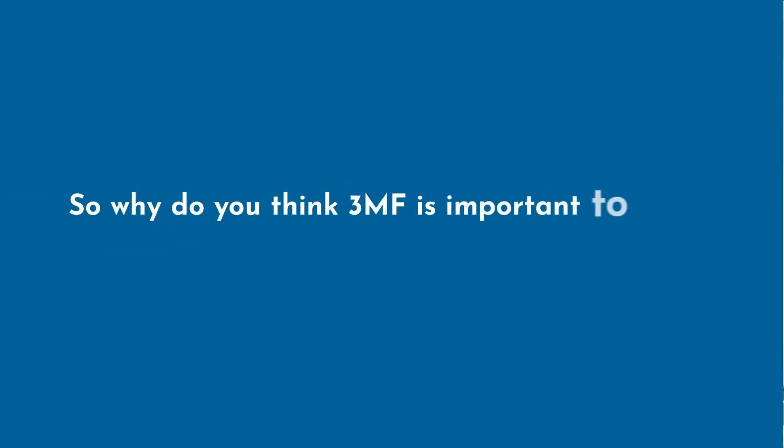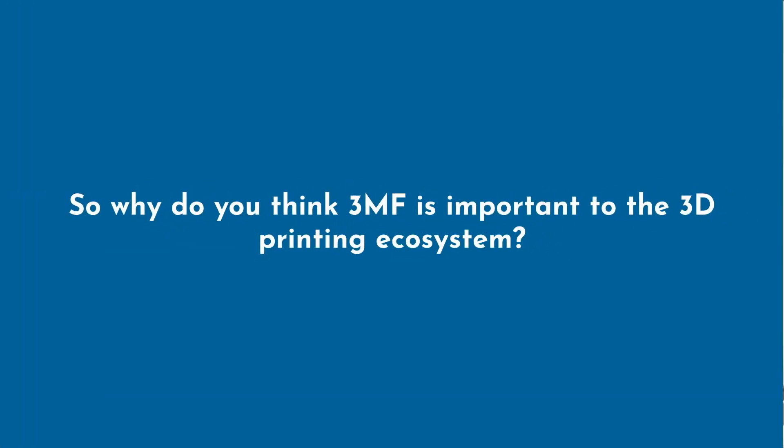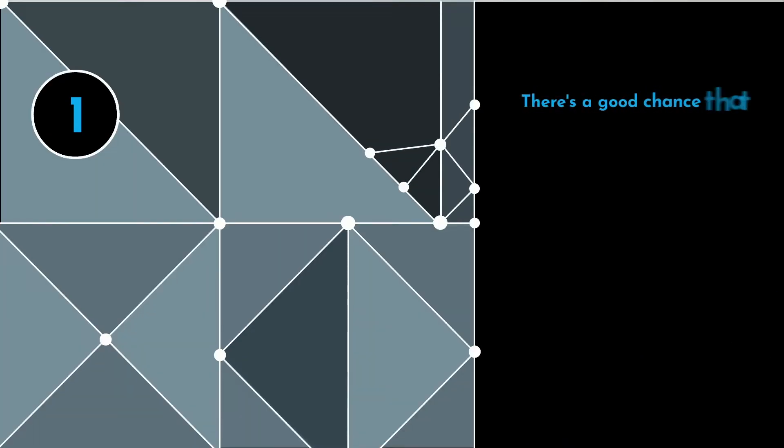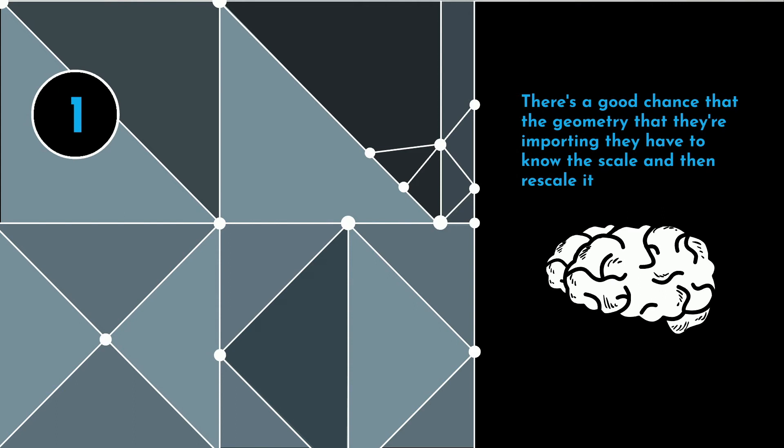Why is 3MF important to the 3D printing ecosystem? Today we see three key things. First, when folks import mesh geometry like STL, STL doesn't contain units, so there's a good chance they have to know the scale and rescale it. We don't have that problem with 3MF — the 3MF contains units. And of course there are the colors and textures as well.